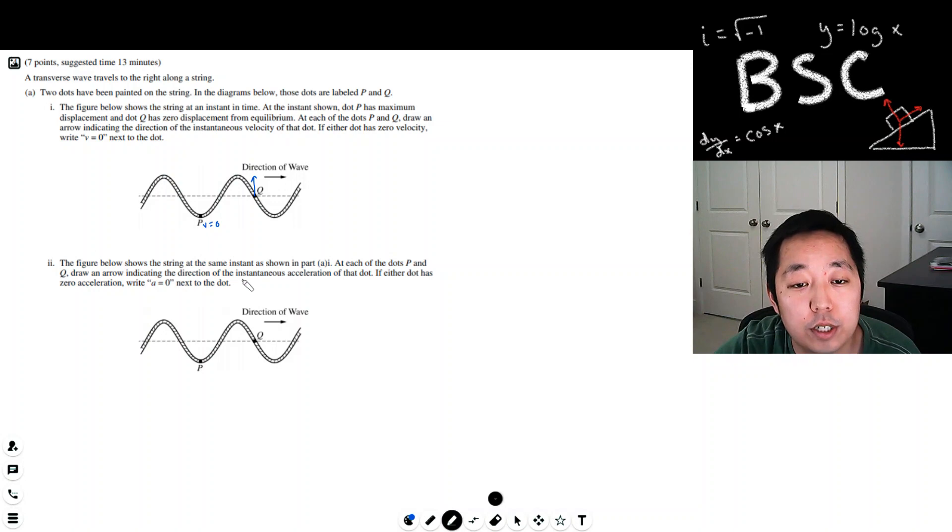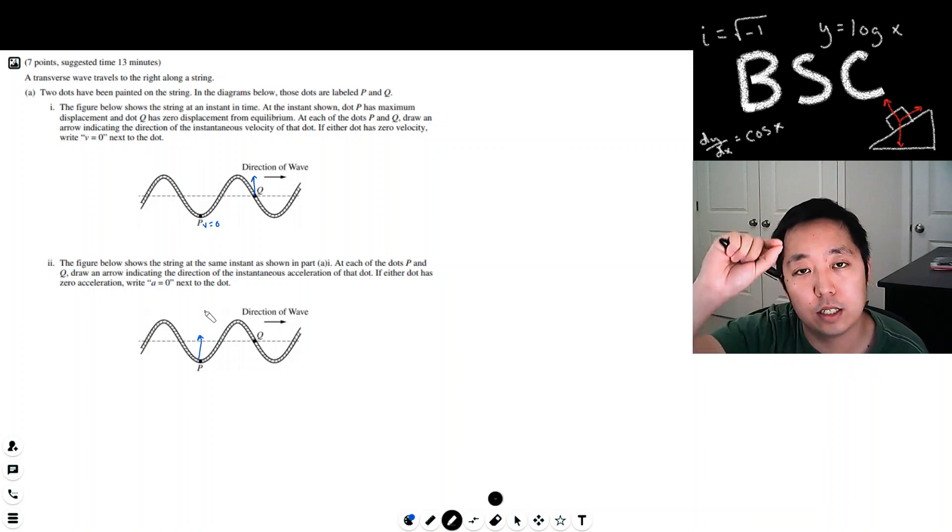The figure below shows the string at the same instance shown in part A. At each of the dots P and Q, draw an arrow in the direction of instantaneous acceleration of that dot. Okay, so in this case, this is the acceleration because it's starting to pull upward. This is like oscillations. It's starting to point upward. And while the velocity is zero, it's going to start going that way.